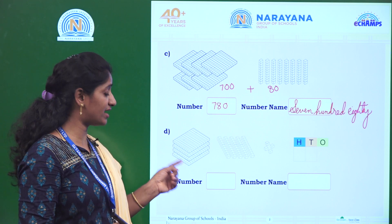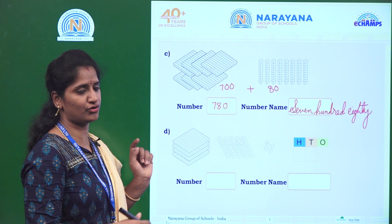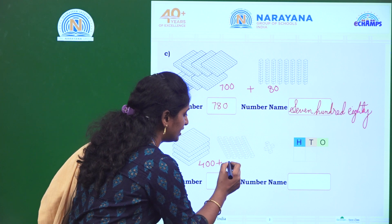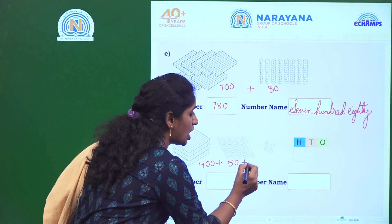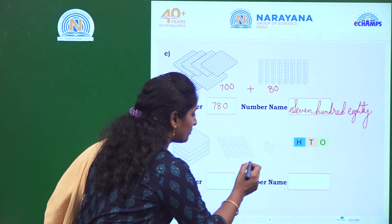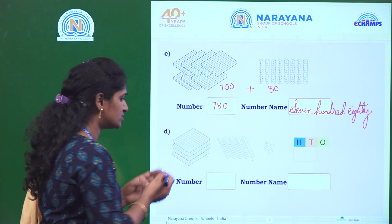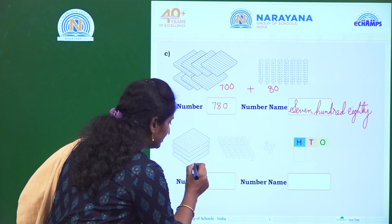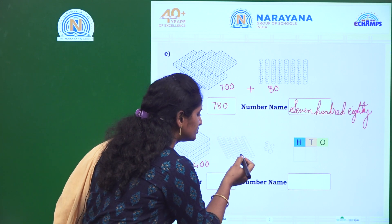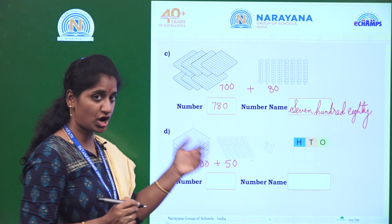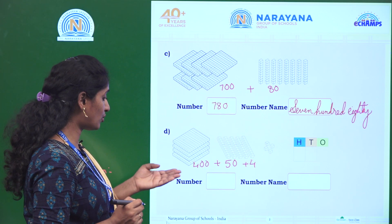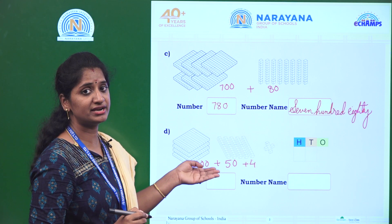So, the next one. How many hundreds? 1, 2, 3, 4. It is 400. And how many tens? 1, 2, 3, 4, 5. It means 5 tens, 50. How many ones? 1, 2, 3, 4. It means 4 ones. So, again: how many hundreds? 1, 2, 3, 4 — 400. How many tens? 1, 2, 3, 4, 5 — 5 tens, 50. And how many ones? 4 ones, 4. What is the number? 454.